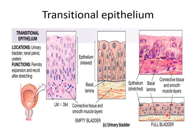In a distended or full bladder, the surface layer of dome-shaped cells appears squamous — they are stretched and flattened. In the undistended or empty bladder, several layers of epithelium are visible and the dome-shaped cells descend into the lumen. In the stretched state there are two to three layers and the surface layer appears squamous, which is why it is called transitional epithelium, as its shape is transitional between states.